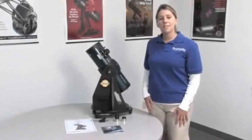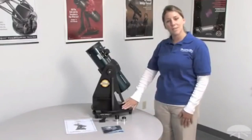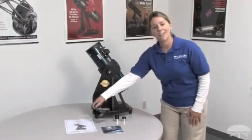These are the items that come included with your Starblast 4.5. The telescope and the base which come assembled, the Orion Easy Finder 2,